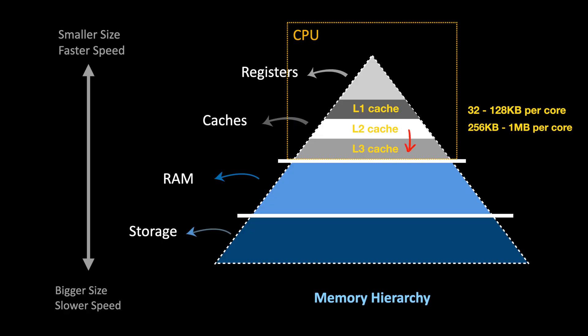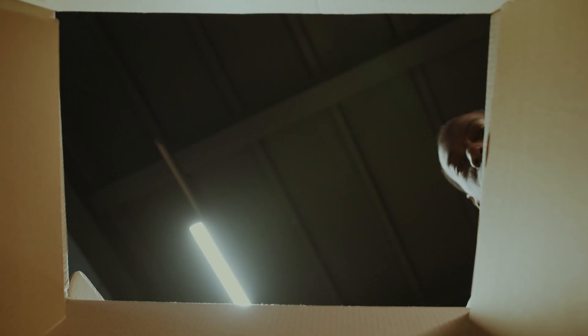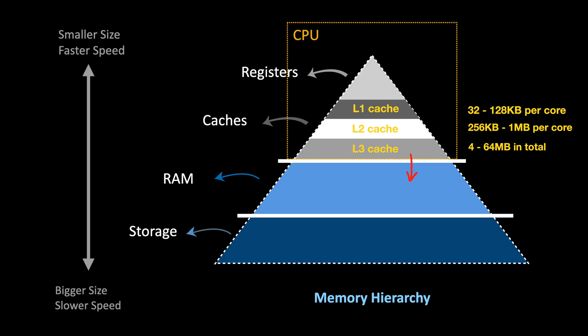If the CPU cannot find data in layer two, it goes to layer three. Layer three is much larger than the other two, ranging from four megabytes to 64 megabytes. Layer three is slower than layer one and layer two, and unlike layer one and layer two — which exist per core — layer three is shared between all cores in the CPU. If the CPU cannot find data in layer one or layer two, it looks in layer three before going to RAM.